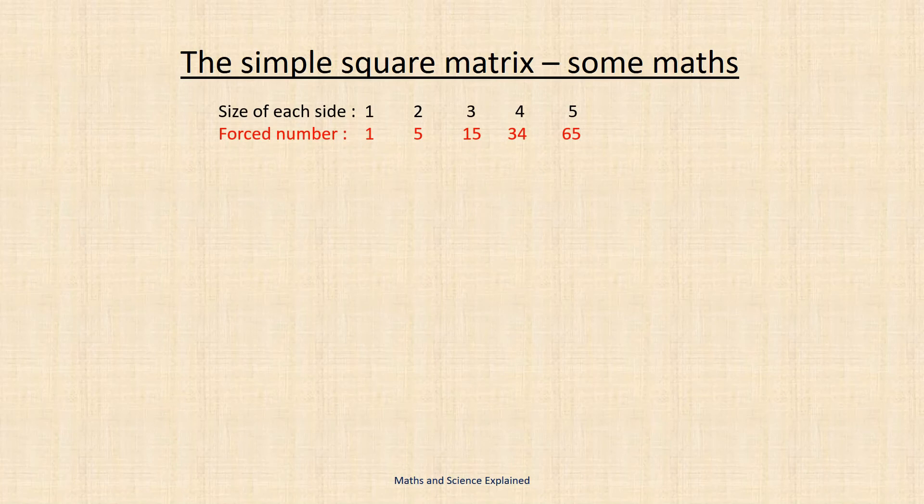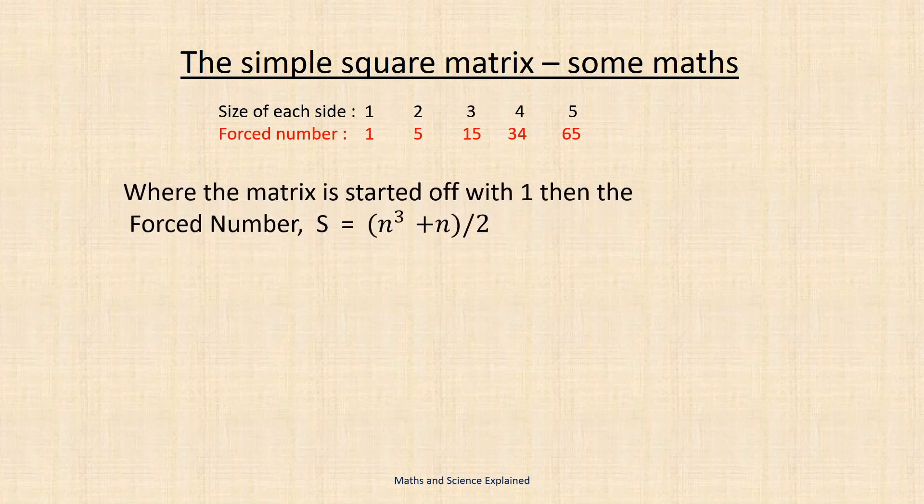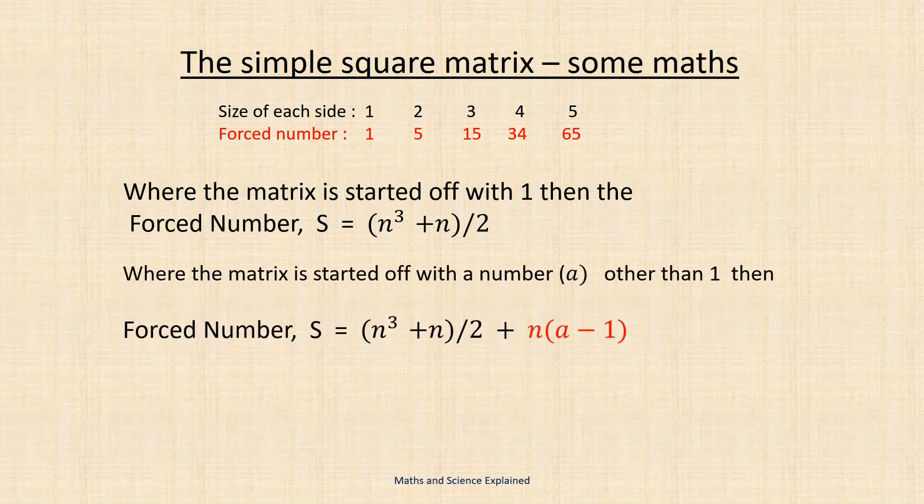Now for the simple square matrix we saw earlier the sum increases with the size of the matrix as shown. For the simple case where the matrix is started off with the number one it can be shown that the sequence leads to a force number S of n cubed plus n all over two where n is the size of the matrix.